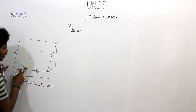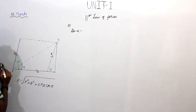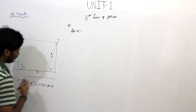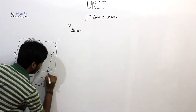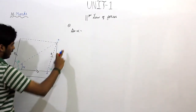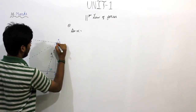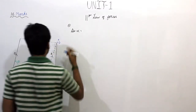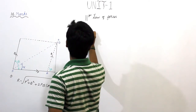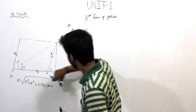This is tan alpha. Tan alpha is equal to opposite side by adjacent. Now we will name the points: this is O, this is A, this is B, and this point is D. So tan alpha equals opposite side by adjacent, where the adjustment is OA plus AB.